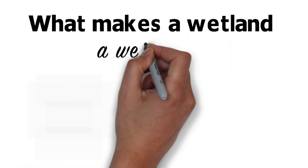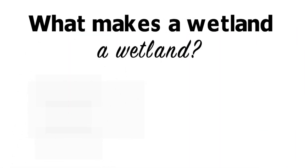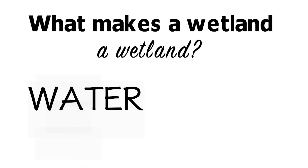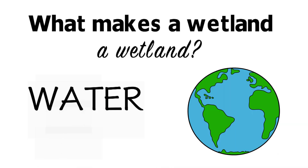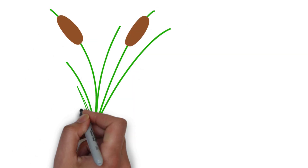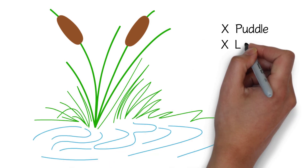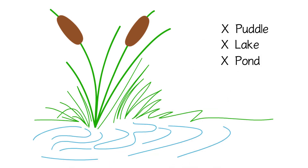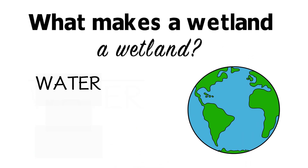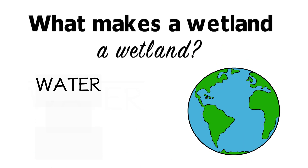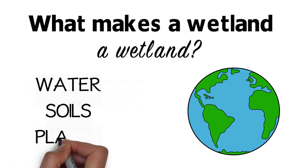What makes a wetland a wetland? The simplest answer is water. Wetlands are found throughout the world wherever land and water mix. There are many different types of wetlands, but a wetland is not a puddle, nor is it a lake, pond, stream, or river. And while water is certainly important, wetlands are also defined by their soils and plants.